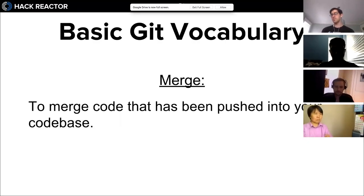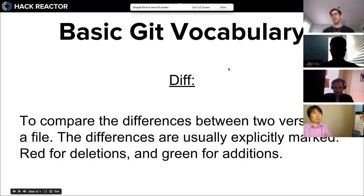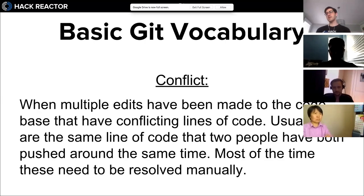'Merge' - to merge code that has been pushed into your code base. When someone makes changes to a repository you own, they'll ask for you to add those changes to the main repository, and you can choose to merge those changes in or reject them. 'Diff' is a command used to compare differences between two versions of a file - differences are usually marked red for deletions and green for additions. A 'conflict' is when multiple edits have conflicting lines of code, usually the same line that two people both pushed around the same time, and these typically need to be resolved manually.